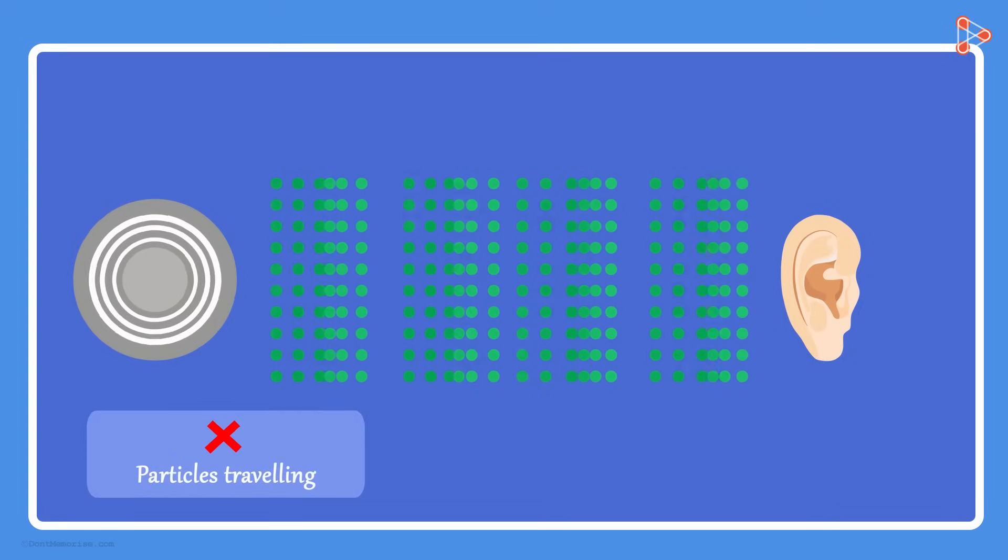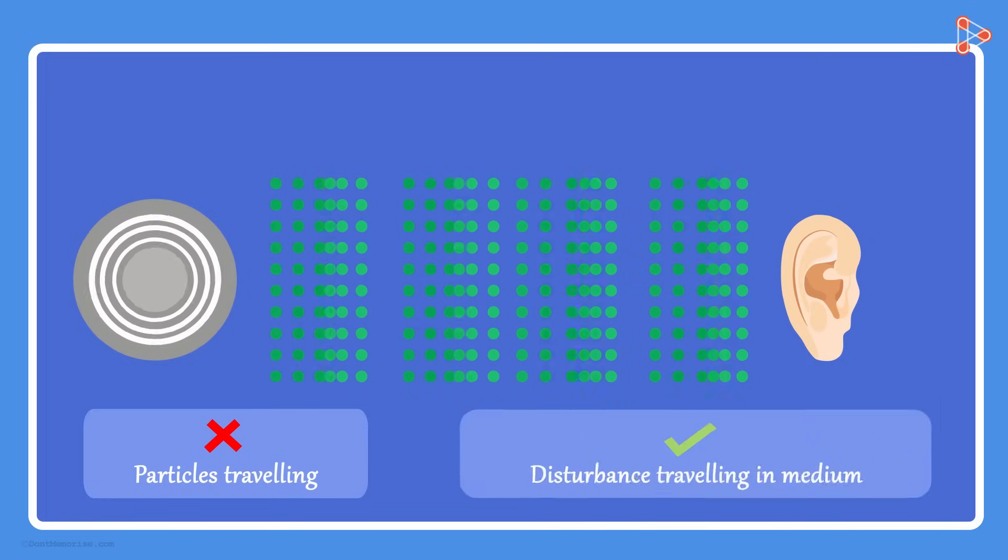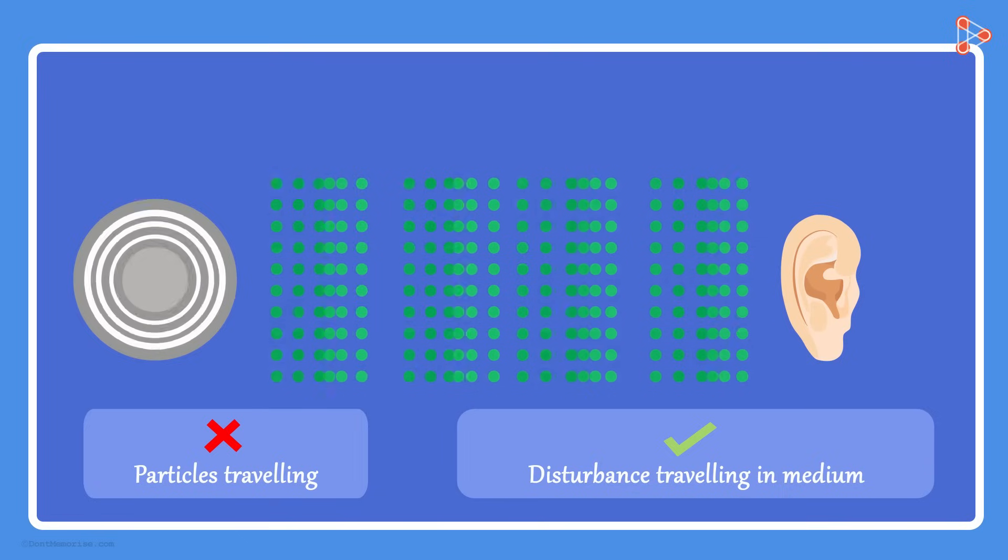We see that particles of the medium are not traveling from the source to the human ear. It is the disturbance produced by a source which is traveling in the medium. The particles are merely oscillating from their mean positions. This disturbance created by the vibrating object in the medium is what we call a sound wave.